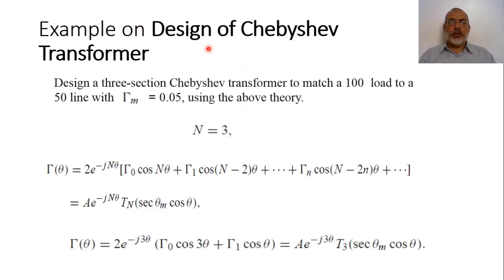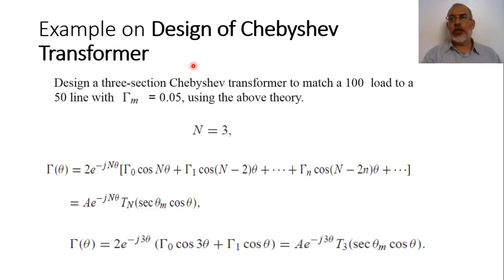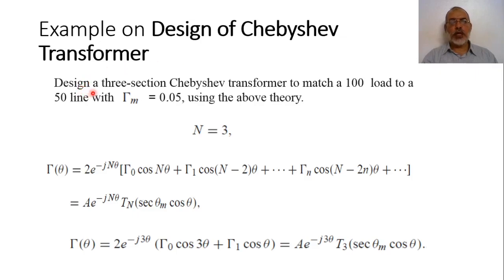Example on design of a Chebyshev-shaped transformer. In the previous video, we presented the basic theory of designing a Chebyshev transformer. Now we are going to apply what we have said to present a numerical example for designing a Chebyshev transformer. It is required to design a three-section Chebyshev transformer to match a 100 ohm load to a 50 ohm transmission line.